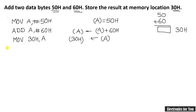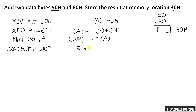Now we have to end the program. The instruction used here is LOOP. Note that this instruction is not part of arithmetic or data transfer — it belongs to the branch instruction type, which I will cover later. We use SJMP — short jump — or you can use AJMP — absolute jump. I am using SJMP LOOP, which indicates the end of the program.